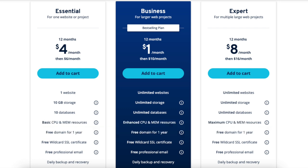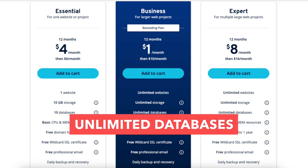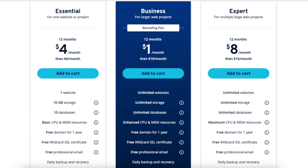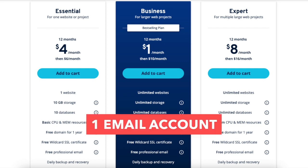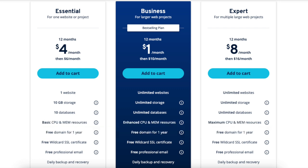The Expert plan is a good plan as it comes with unlimited websites, unlimited storage, unlimited databases, maximum CPU and MEM resources for even better site performance over the Essential and Business plans, one email account, and a free domain name with an annual term. Click the add to cart button on the plan you'd like to select. For this tutorial I'll select the Business plan.